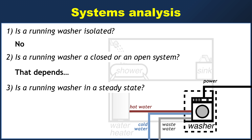The final question: is a running washer in a steady state? If you consult your lecture notes, you'll see that a steady state simply means that the properties of the system are not changing in time. Generally speaking, we would not say that's true for a washer. At the beginning of the cycle you have hot and/or cold water going in, which is potentially changing the temperature of the system but also its mass. Likewise, when the wastewater goes out, it can change the mass and it can change the temperature.